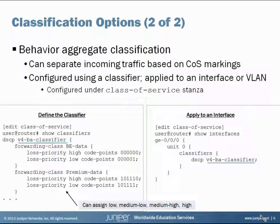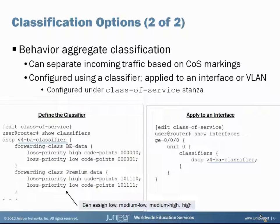Things here are configured under the class of service section of the hierarchy. On the left side you can see a classifier defined of type DSCP — so it's an IPv4 DiffServ code point classifier — called 'v4_ba_classifier'. Reading the bottom example backwards: a code point of 101111 means traffic with those bits in the ToS byte of the packet header will be given a loss priority of low and assigned to the forwarding class 'premium data'. At the top, all zeros belongs in the best effort data forwarding class with a loss priority setting of high.